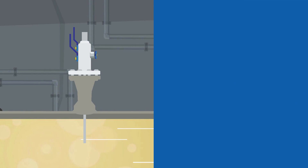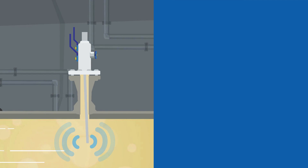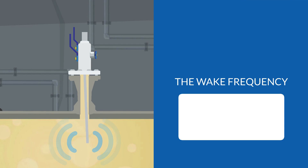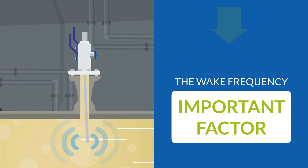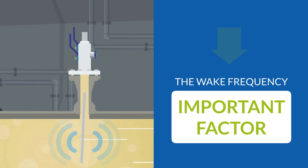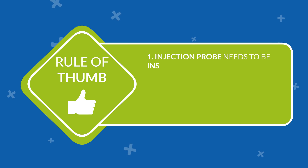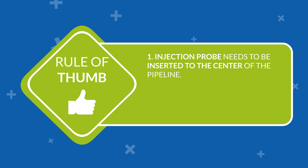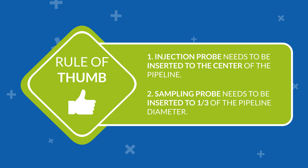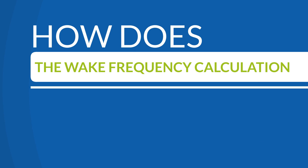Considering that an object inserted into the pipeline can prove disastrous if not properly designed, the calculation of the wake frequency becomes an important factor in the design of an injection or sampling DBB valve. The following rule of thumb applies for the length of the parts to be inserted into the pipeline: first, the injection probe needs to be inserted to the center of the pipeline; second, the sampling probe needs to be inserted to one-third of the pipeline diameter.